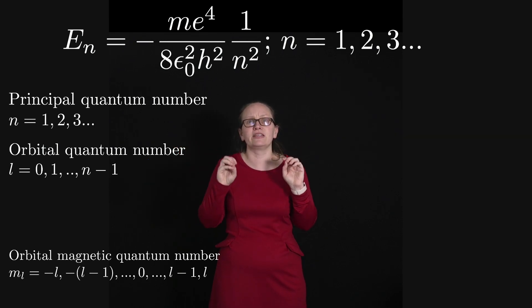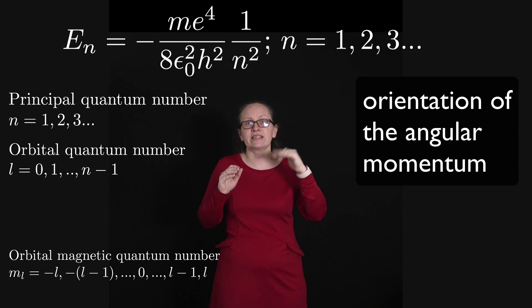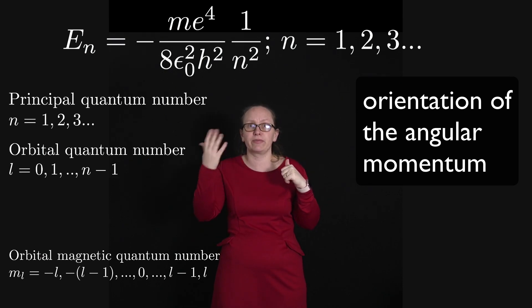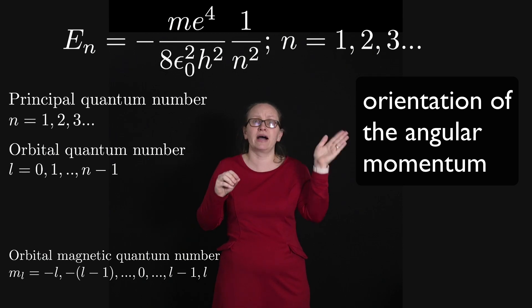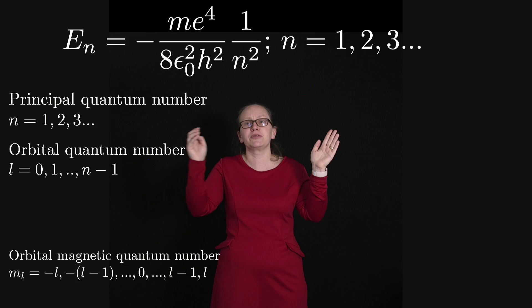The final quantum number is known as the orbital magnetic quantum number. This is basically related to the orientation of the orbital quantum number. So sometimes it's called the projection of the orbital quantum number. Now this one has more values. It can go from ML equals minus L through all the integers through zero up to ML equals L.